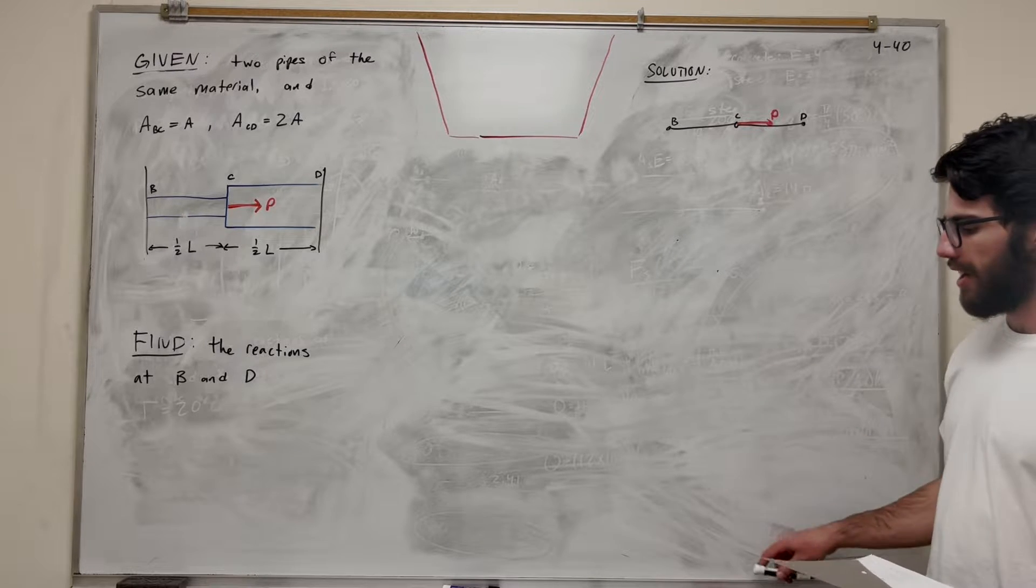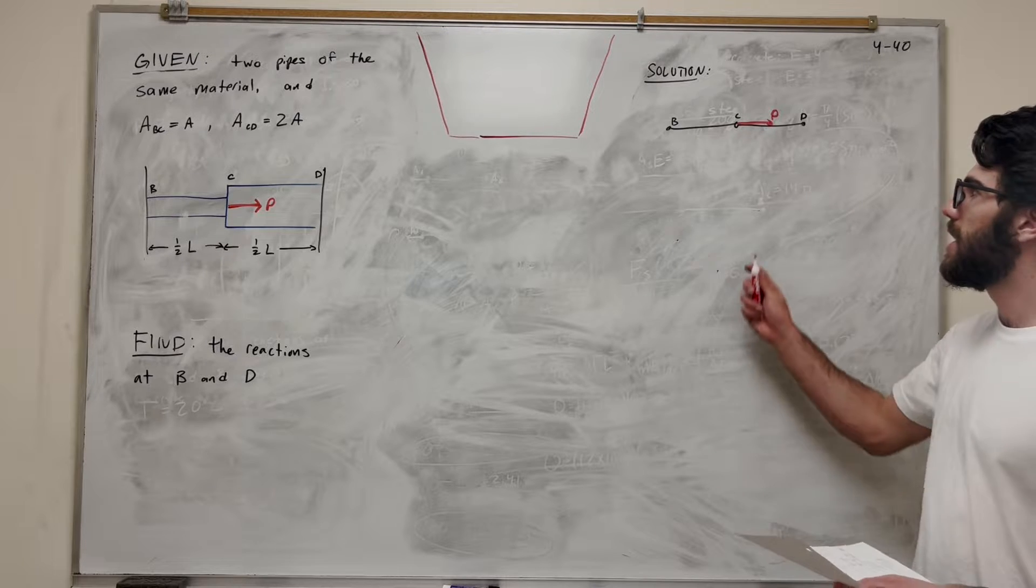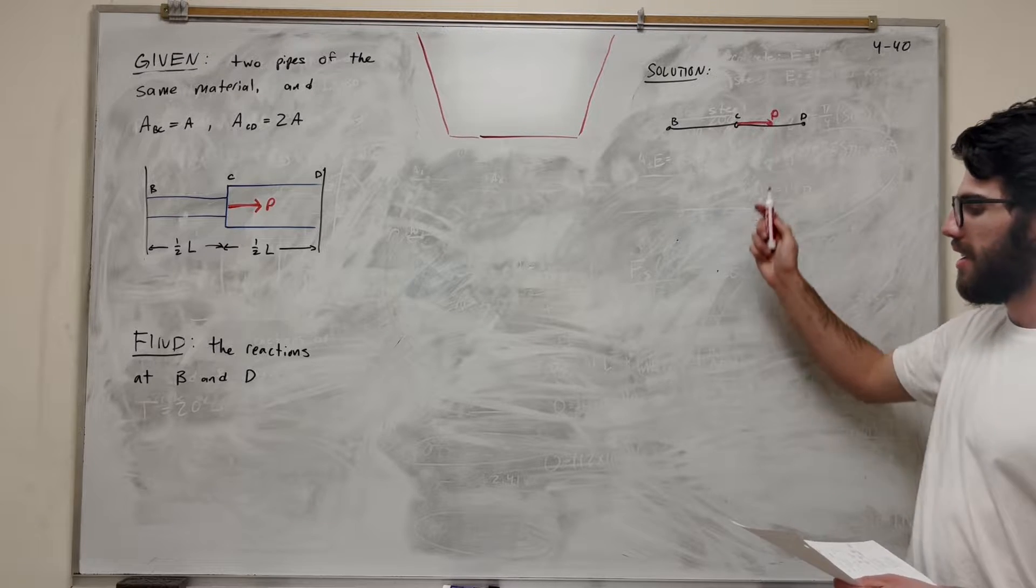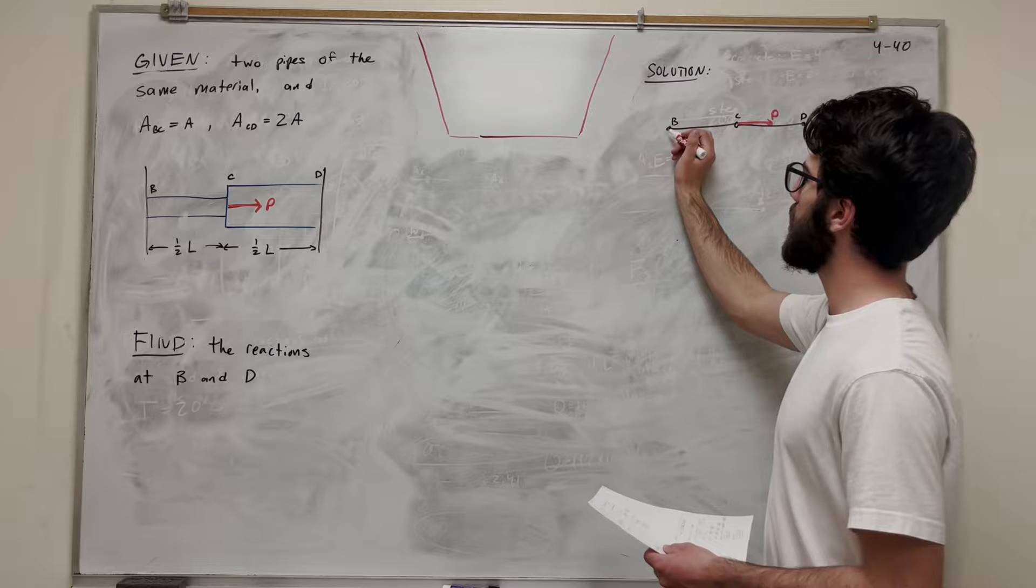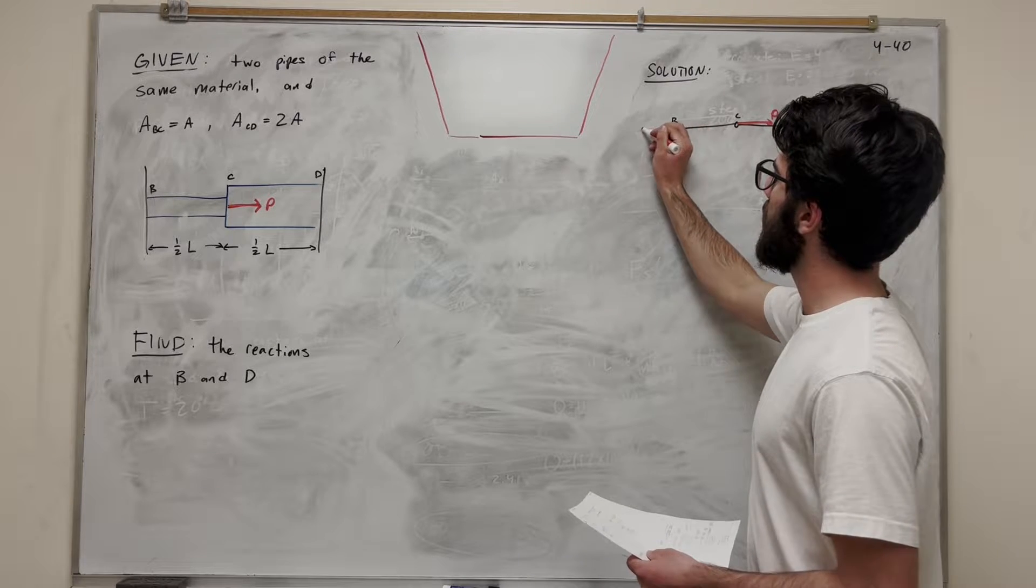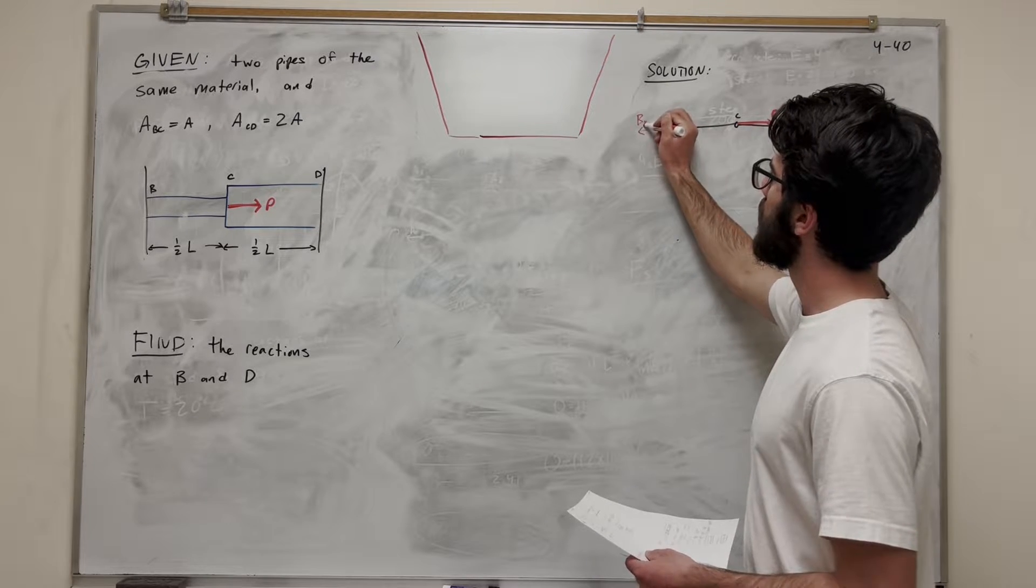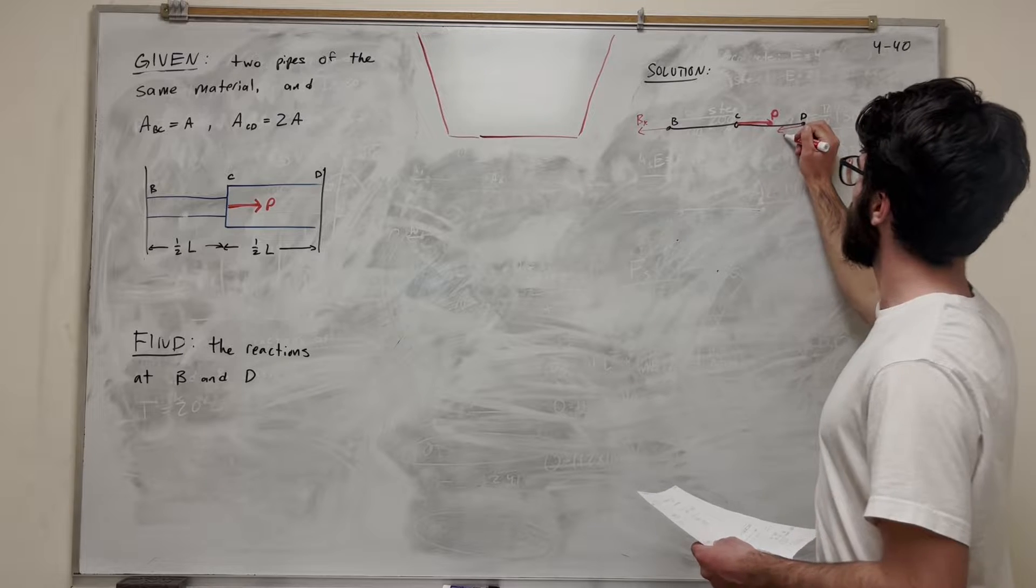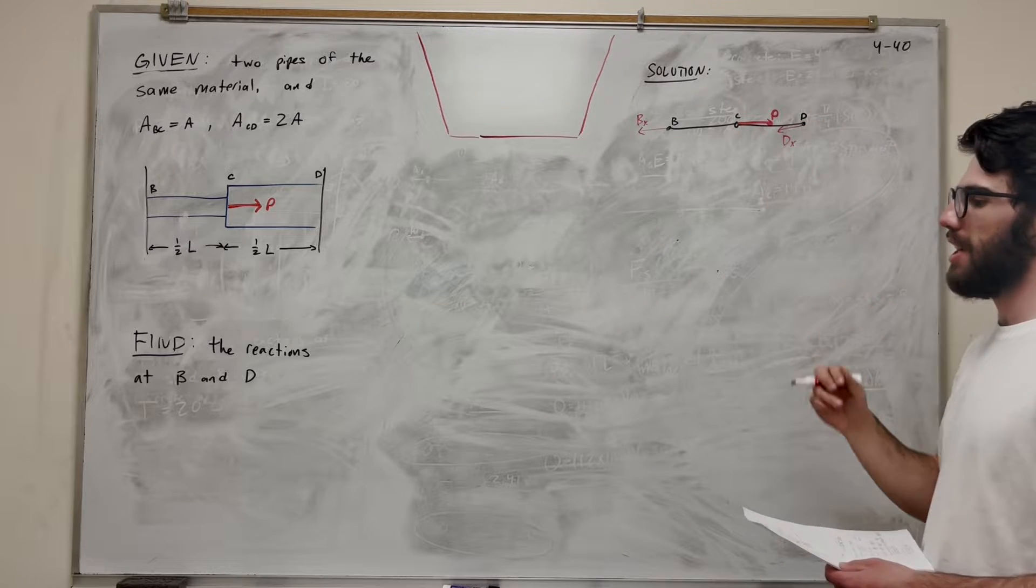So to start we're going to draw a force body diagram and then with our reactions of course. So we have P is pulling to the right and so we're going to have some support reactions. So just in the x direction. We know that we have B of x and we have D of x. And they're going to push away from P to counterbalance that.